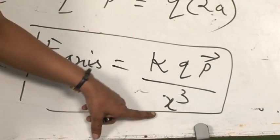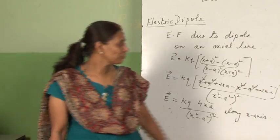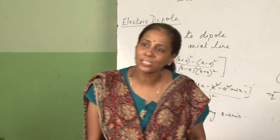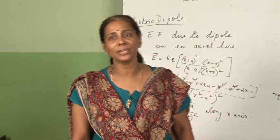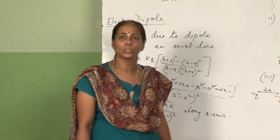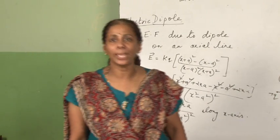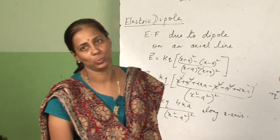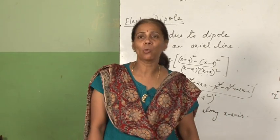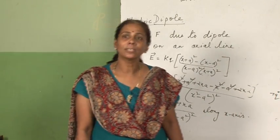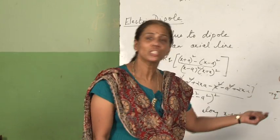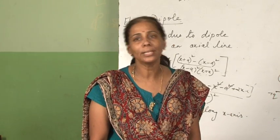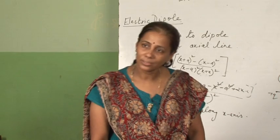So the final expression for the electric field due to a dipole on the axial line when the dipole is very small is E equal to 2kp by x³. Tomorrow we will continue with the next part of this topic, which is the electric field on the equatorial line. Thank you.